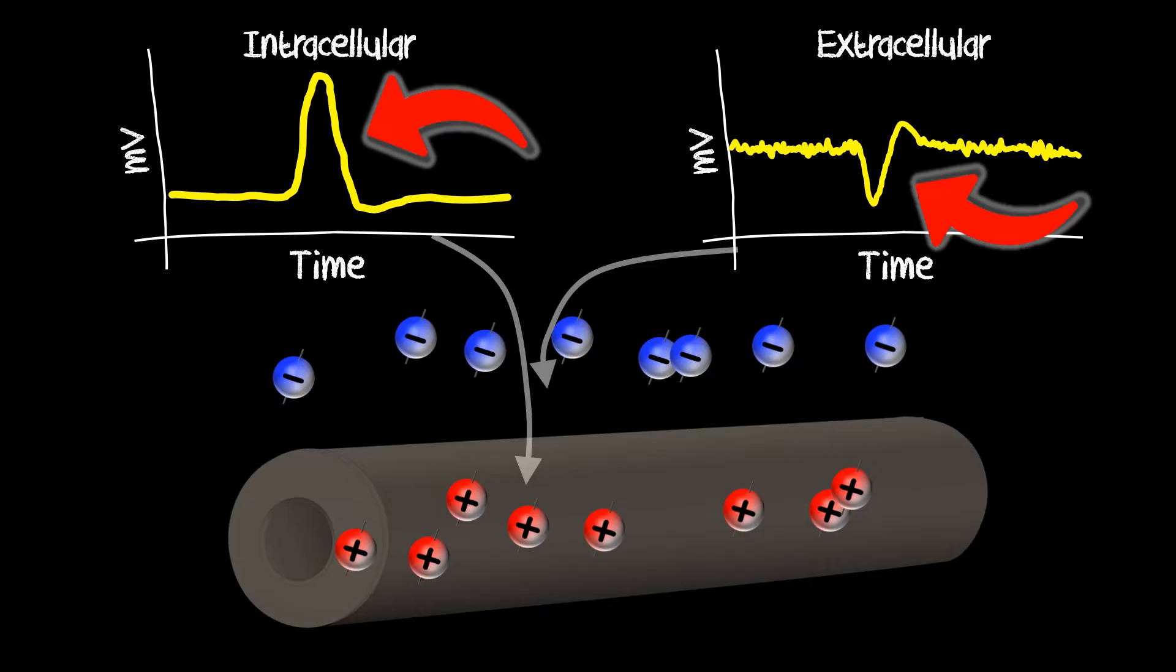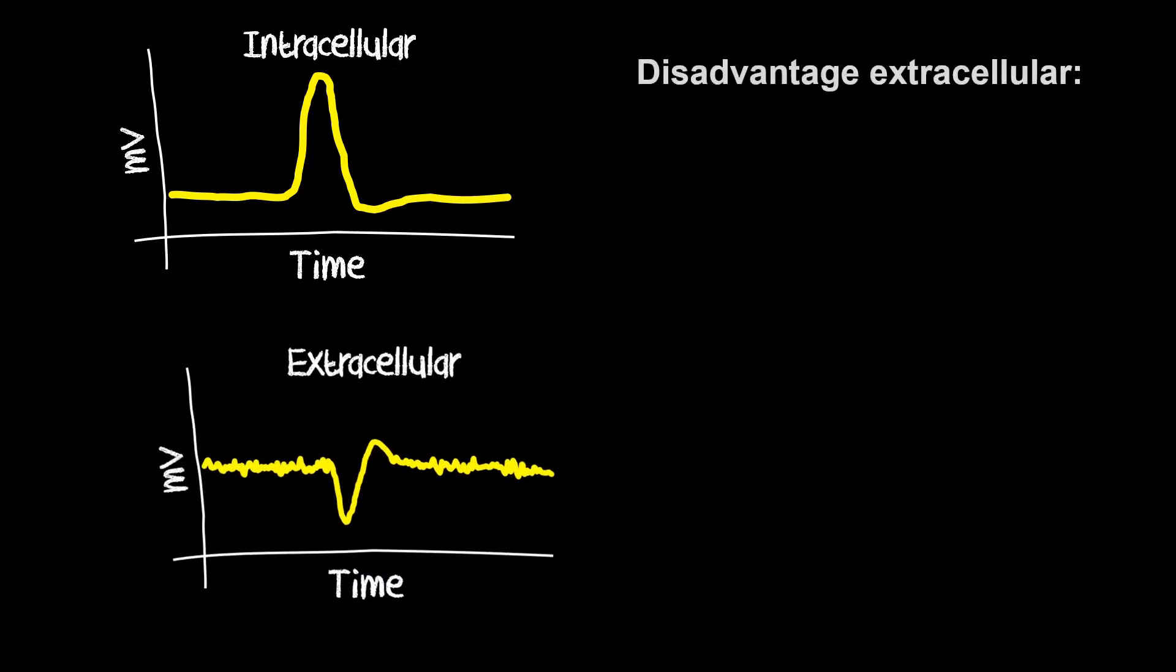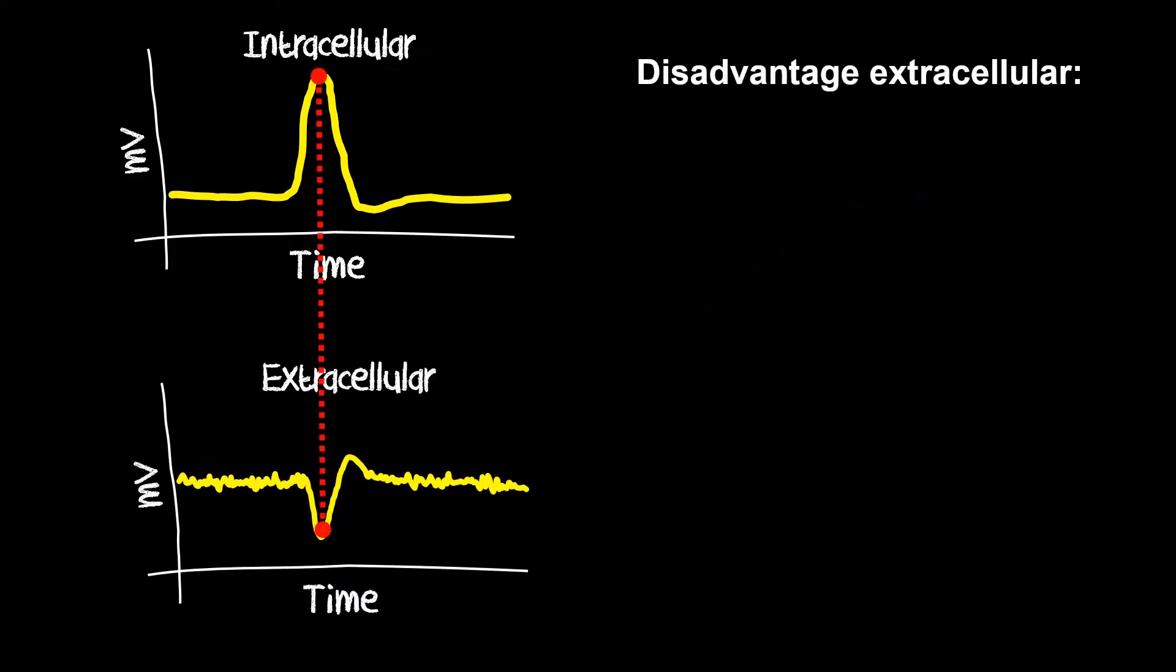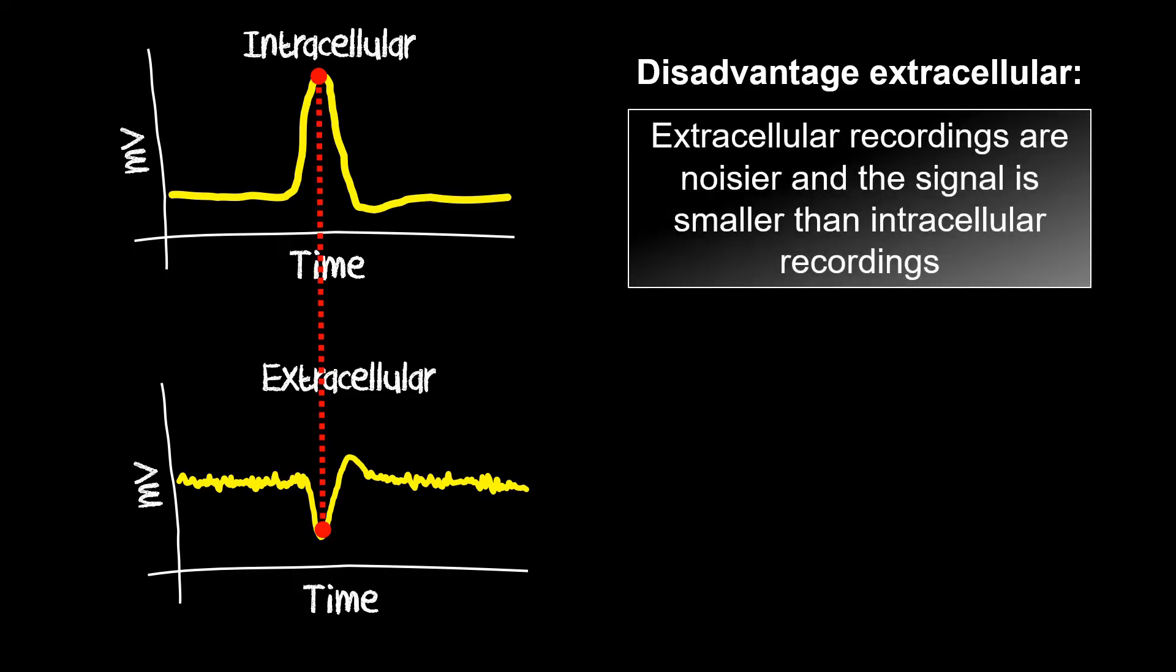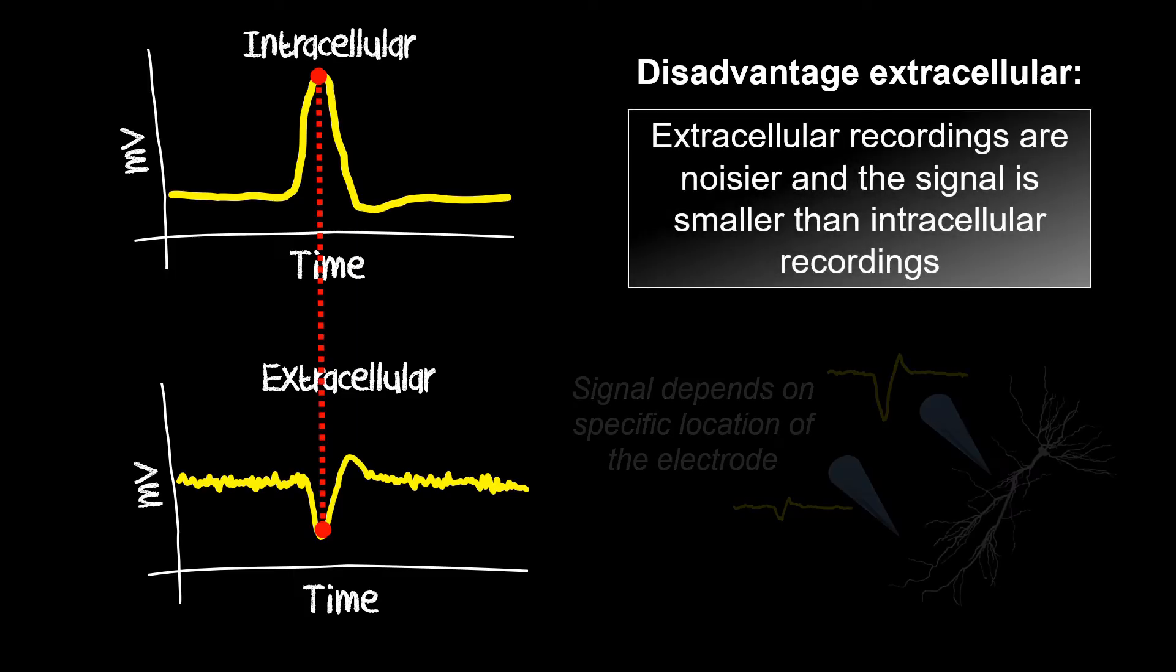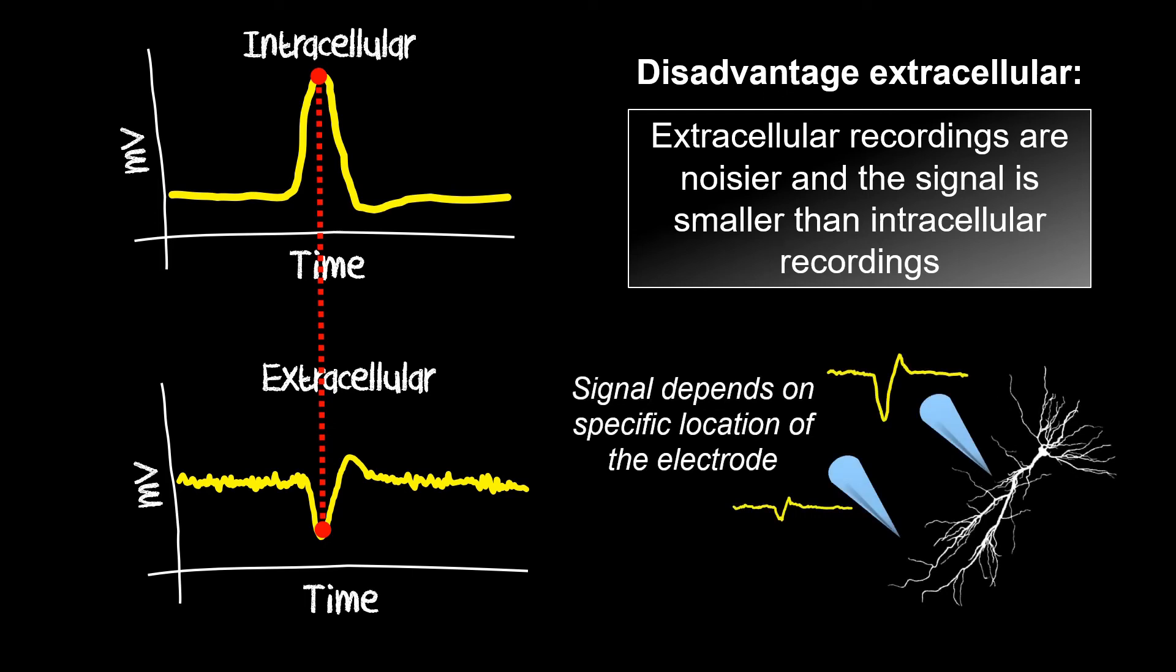Thus, extracellular recording signals are flipped, and they are a lot noisier, resulting in a smaller signal. How the exact signal looks like will also depend on where exactly the electrode is located in the extracellular fluid in relation to the cell.